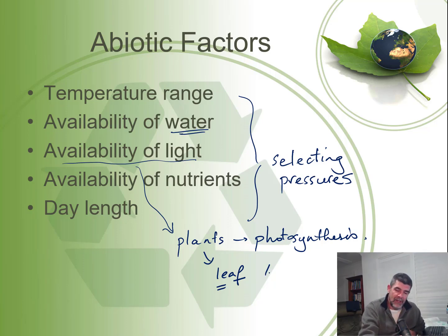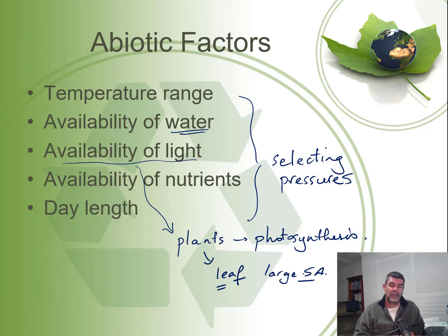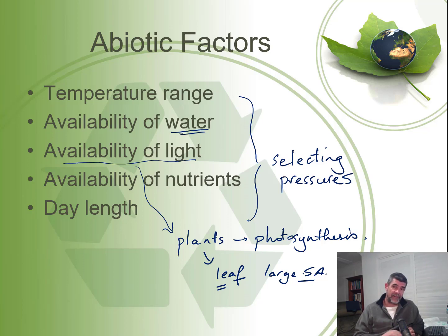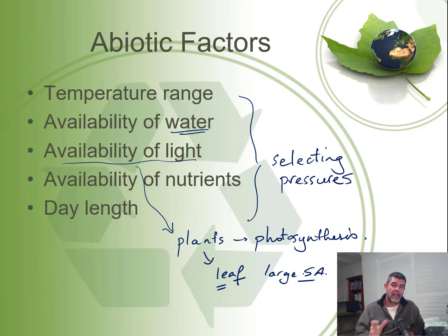That means things like large surface area — always important in biology because it's so often a critical factor linking to the structure of different biological organisms, organs, and cells. Large surface area increases the efficiency of taking in light and using it for photosynthesis. We want to look at specific examples of where abiotic selection factors may have influenced the structures of different types of organisms.